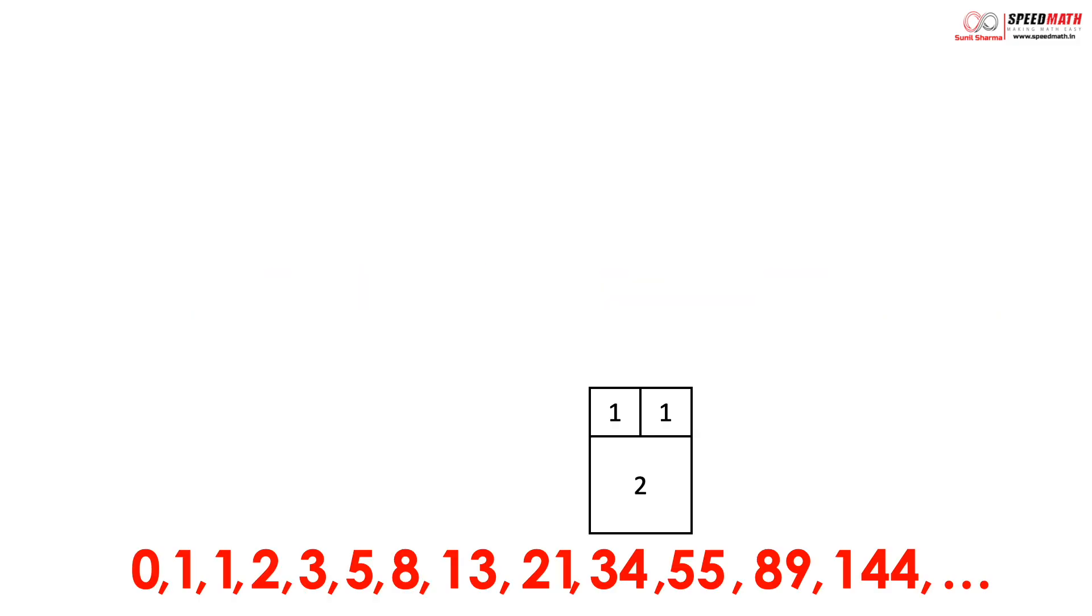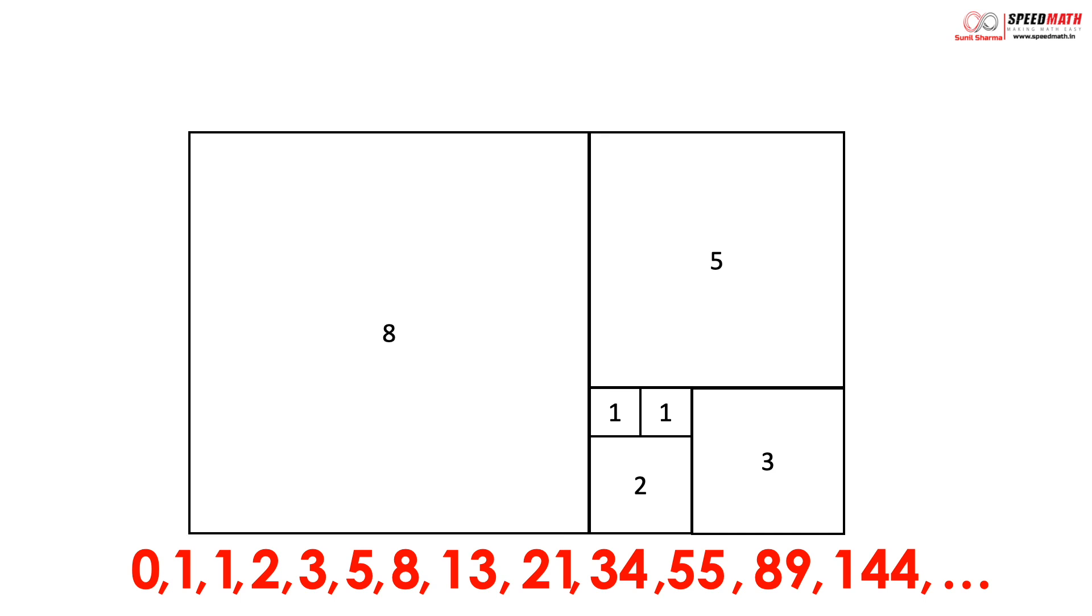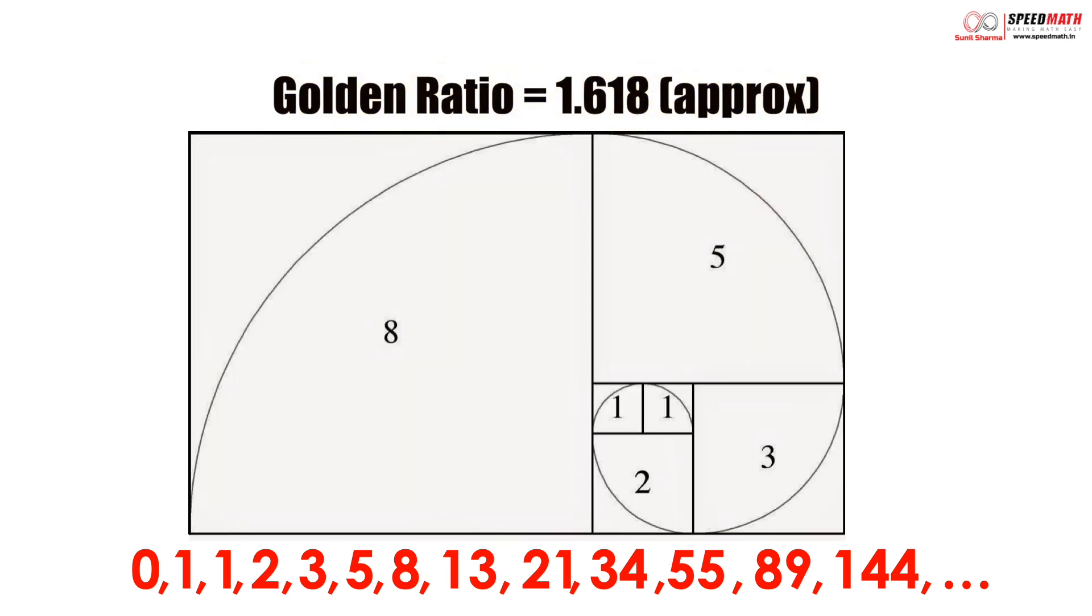If we create squares using Fibonacci numbers and place them adjacent to each other, we get something called as golden rectangle. If we connect the quarter circle of each square, we get something called as golden spiral.